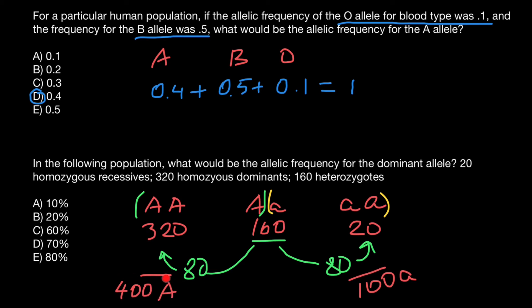In this gene pool, we have 400 dominant alleles and 100 recessive alleles. But our answers are given in percentage form. Let's multiply our numbers by two. And the ratio is going to be the same.